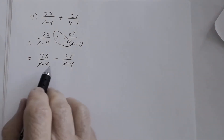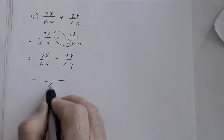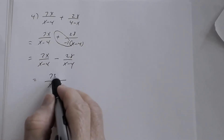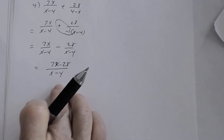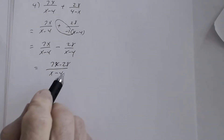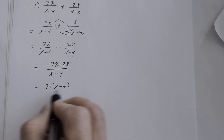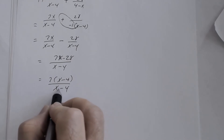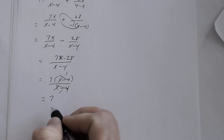That looks like the previous three problems, so I'm going to write this as one rational expression. The numerator is going to be 7x minus 28. Before you say that's the answer, remember you've got to simplify the rational expression. I can factor out a 7, so I get 7 times x minus 4 divided by x minus 4. These divide out, and so the answer is just 7.